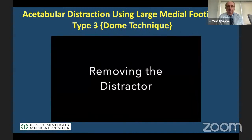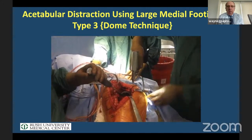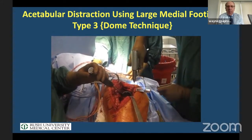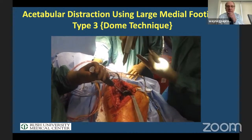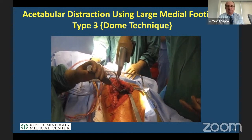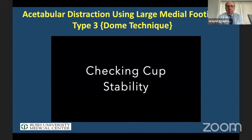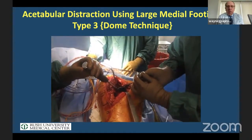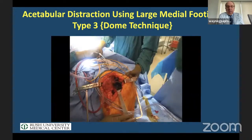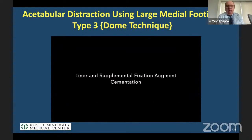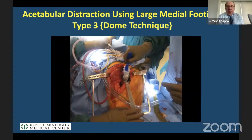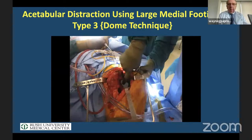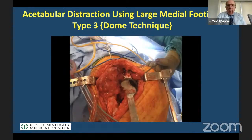The distractor is removed — you can see the pin that the distractor was on, which is the second pin. The distractor pulls against these pins. Checking the cup stability — it's rock solid. Then the screws are placed in. This is stable just by using the augments and the cup. The liner is cemented in place. We use a revision shell in every one of these cases.